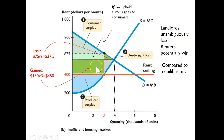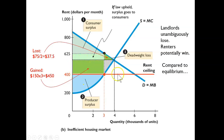But consumers also gained consumer surplus by transferring some of the producer surplus to themselves due to the lower price. That area has been transferred from producers to the consumers, and that turns out to be $450. So the amount of consumer surplus lost due to deadweight loss — the restriction in output — is less than the amount gained by transferring producer surplus. Overall, the renters actually win from this policy; it benefits them in economic welfare terms.